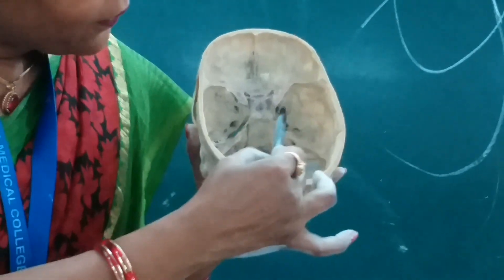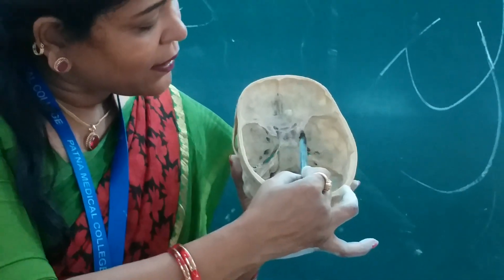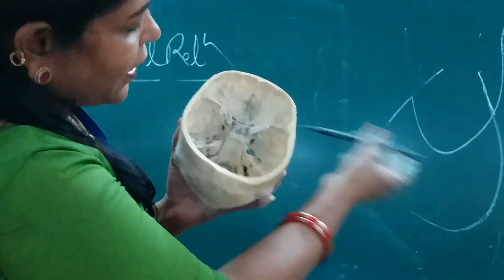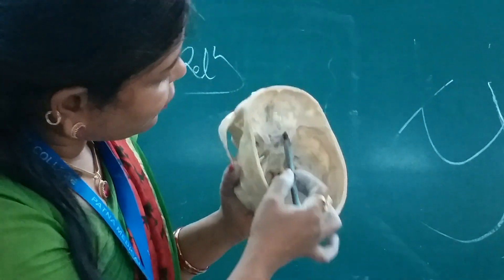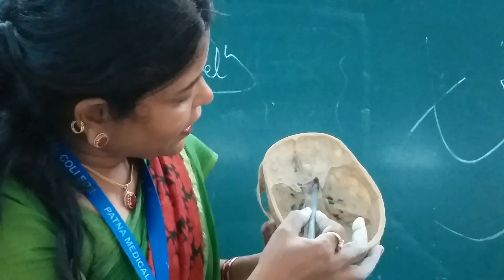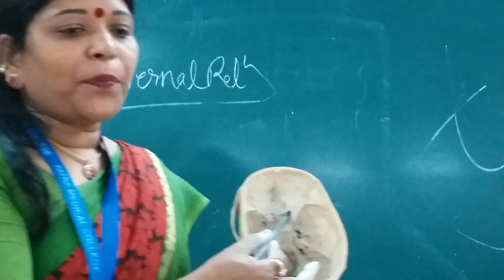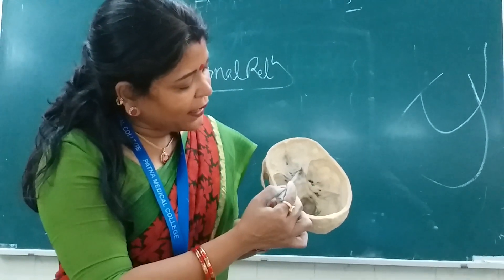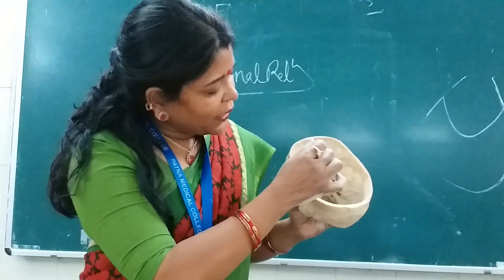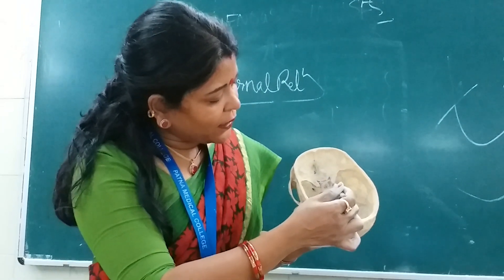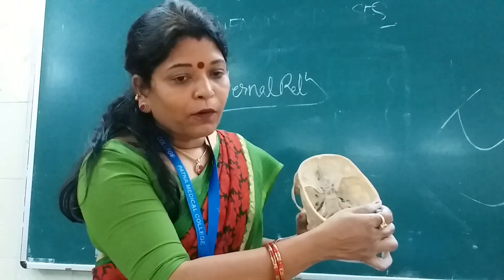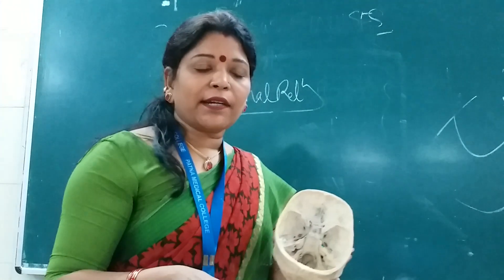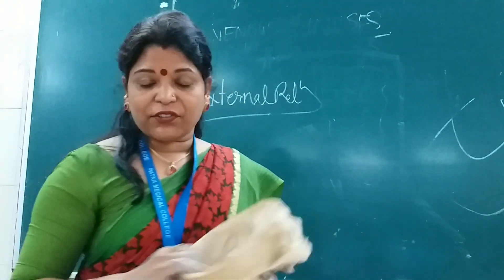In the middle cranial fossa, anterior to the cavernous sinus, there is the superior orbital fissure and the optic canal. Through the optic canal, the optic nerve passes and forms the optic chiasma. So the olfactory tract, optic chiasma, and optic tract are in the superior relation.